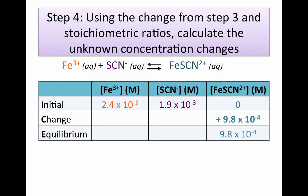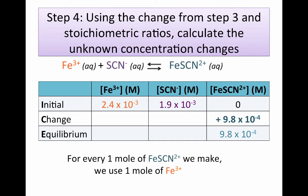Now we're on to step four. We're going to take that change and use it to calculate the unknown concentration changes using the stoichiometric ratios from the balanced chemical equation. For iron 3+: for every one mole of iron thiocyanate we make, we use one mole of iron 3+. So we are making 9.8 × 10⁻⁴ molar, which means we use up 9.8 × 10⁻⁴ molar of iron 3+.